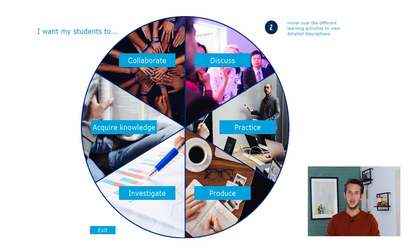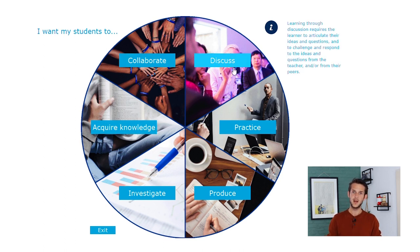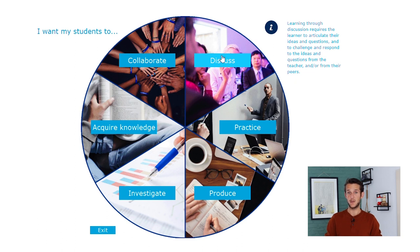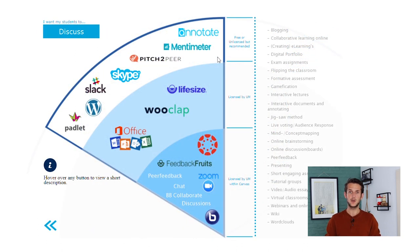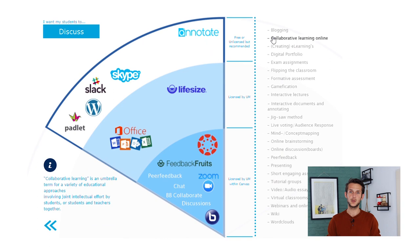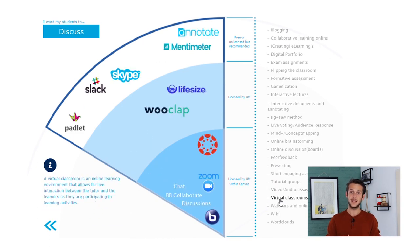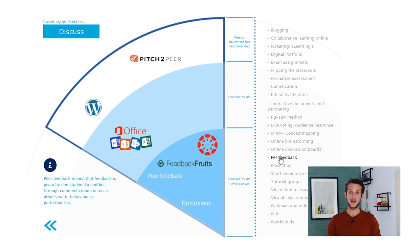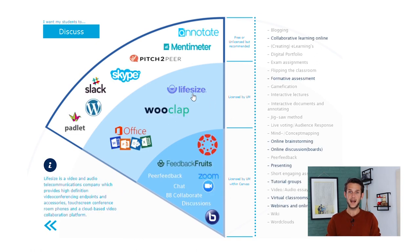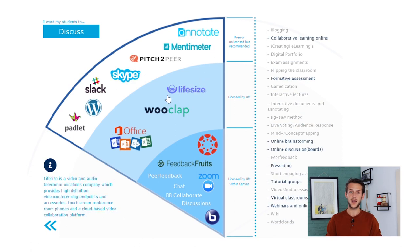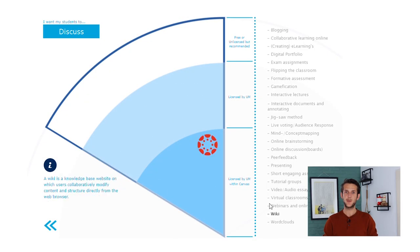In the teacher tool wheel, we have added an extra layer that is about what you as a teacher want students to do. For example, let's say you want them to do a discussion. You click on this piece of the pie and it zooms in to an overview where you find all the tools that assist you in doing online discussions. Next to that, every page has a list of teaching methods on the right hand side, which again interactively shows you which tools are related, as well as the other way around.